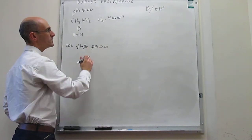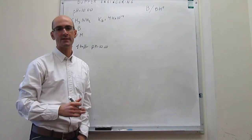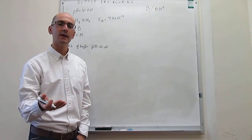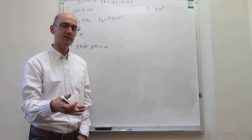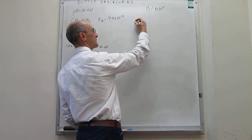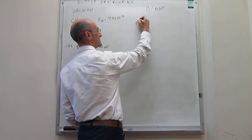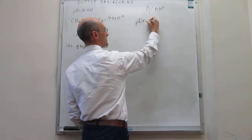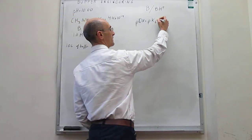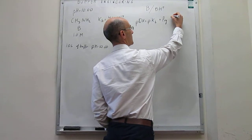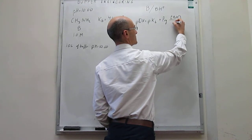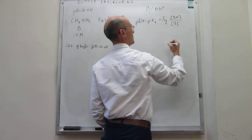The way to do this is with the Henderson-Hasselbalch equation, which relates pH to the pKa of a weak acid. In the base version, you have the pOH of a buffer solution related to the pKb. In base form, the Henderson-Hasselbalch equation looks like this: the pOH of the solution equals the pKb of the base plus the base-10 logarithm of the concentration of the conjugate acid over the concentration of the weak base.